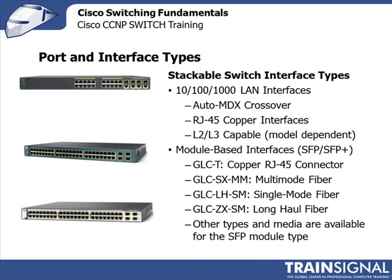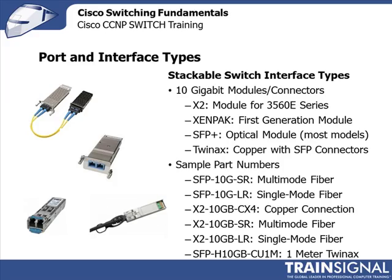For stackable switch interface types, we're also looking at 10 gigabit connectors. The X2 is the module for the 3560E series and tends to be wider — it doesn't look like the SFPs at all. There was the XenPak, which was essentially the first-generation 10 gigabit module, usually only four to a particular slot for chassis-based switches. Then you have the SFP+, the optical modules. Pictured lower left is an optical SFP, and pictured to the right is the TwinX connector. SR and LR usually refer to single-mode short-reach or long-reach, and multimode respectively. These are the types of connectors used for 10 gigabit connectivity.